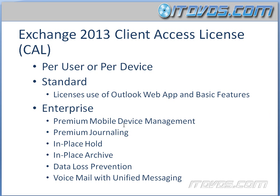Enterprise CAL is going to give you some extra features like premium mobile device management, which enables more extensive policy management via Exchange ActiveSync — such as the ability to prevent a mobile phone from being used as a modem for a PC. Also premium journaling, sometimes called user distribution list journaling, which offers more granular control and potentially smaller journals by limiting journaling to email sent to or from specific users or groups.